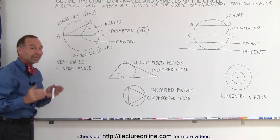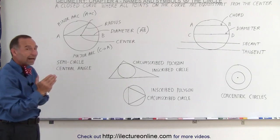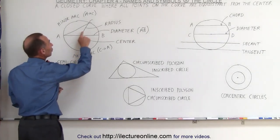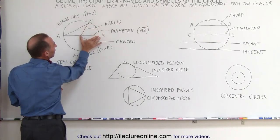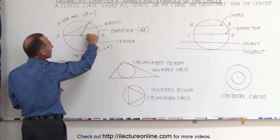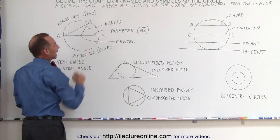A central angle is an angle formed by two lines drawn from the center to the edge of the circle called the radius. So this is also a radius, this is a radius, so this angle here is called a central angle.